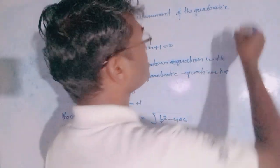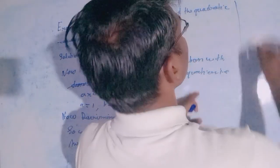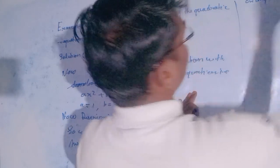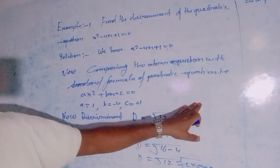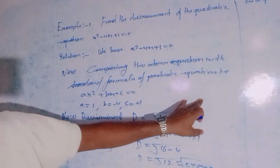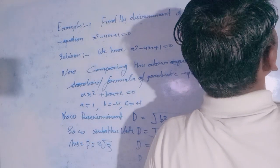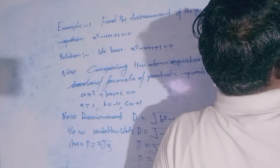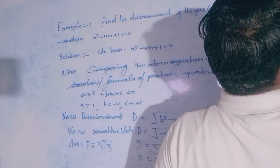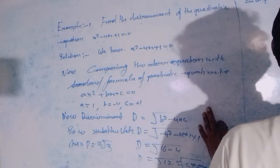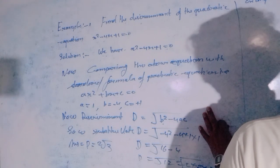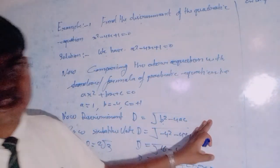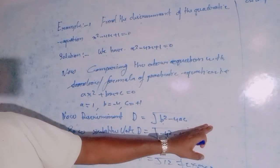Let's move to Example two. We will find the discriminant of the given quadratic equation.